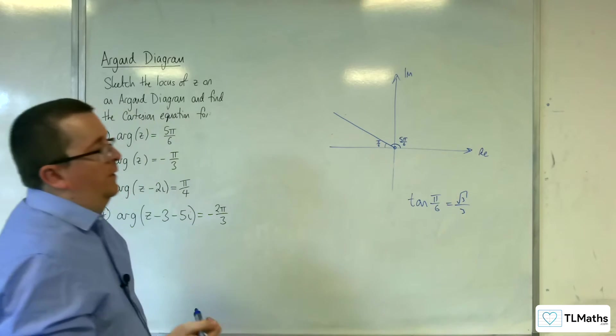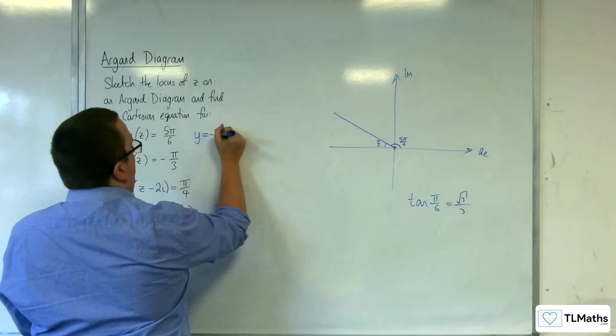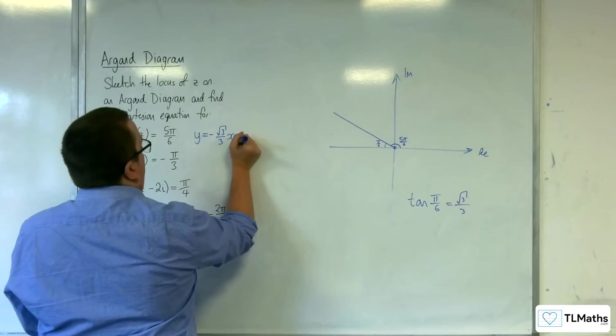So I want the negative of that. And because it's going through the origin, it's just going to be y equals minus √3 over 3x,